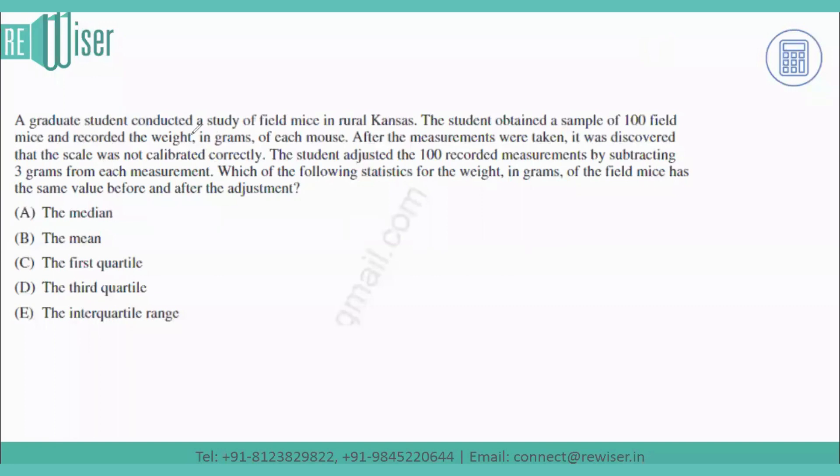A graduate student conducted a study of field mice in rural Kansas. The student obtained a sample of 100 field mice and recorded the weights in grams of each mouse. After the measurements were taken, it was discovered that the scale was not calibrated correctly. The student adjusted the 100 recorded measurements by subtracting three grams from each measurement. Which of the following statistics for the weight in grams of the field mice has the same value before and after the adjustment?